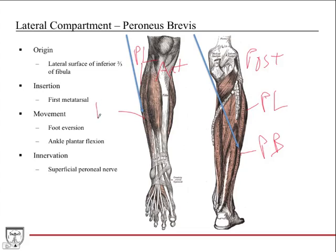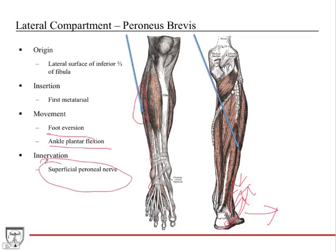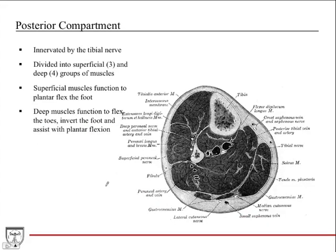Peroneus brevis originates from the lateral surface of the inferior two-thirds of the fibula — a long, broad origin. It inserts onto the base of the fifth metatarsal, wrapping around and under the foot. Muscles contract, pulling up on the lateral aspect so the sole points laterally — eversion, just like peroneus longus. It also helps with ankle plantar flexion because it crosses the ankle joint. Innervation is the superficial peroneal nerve.